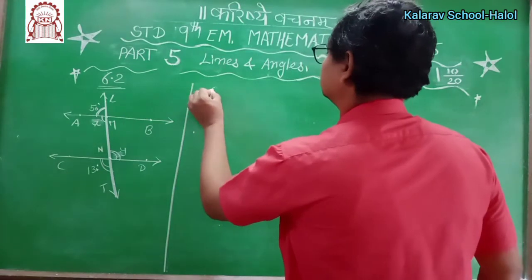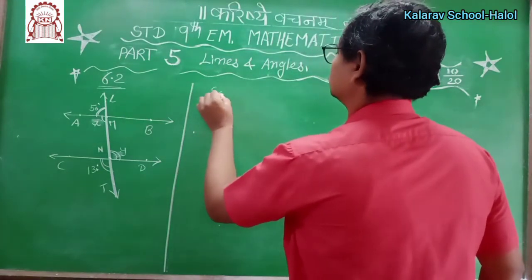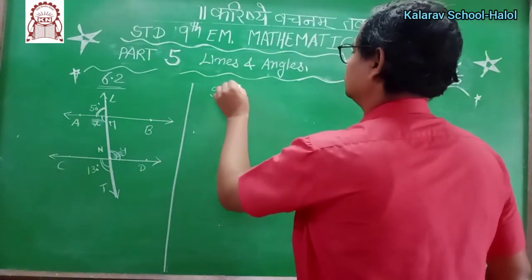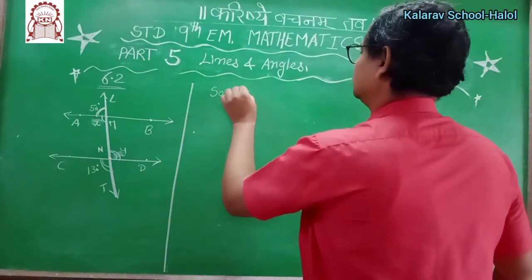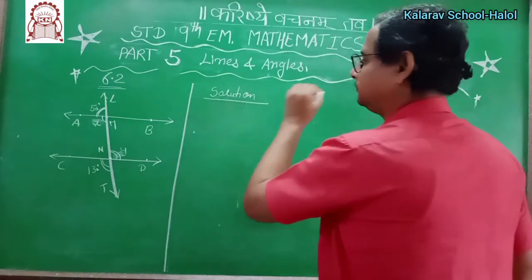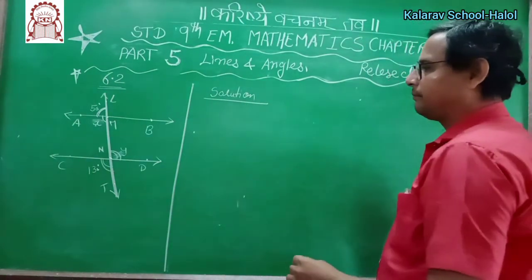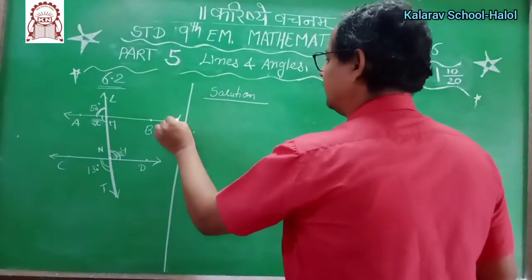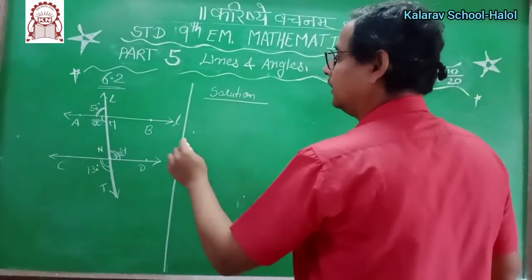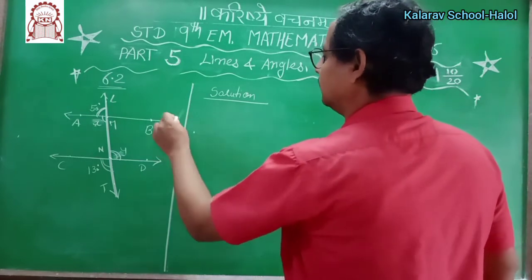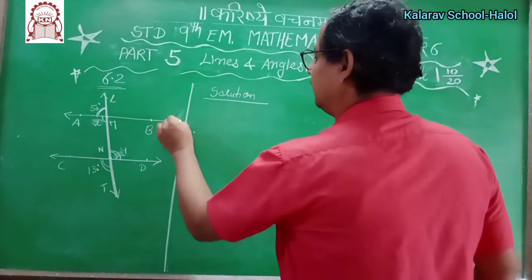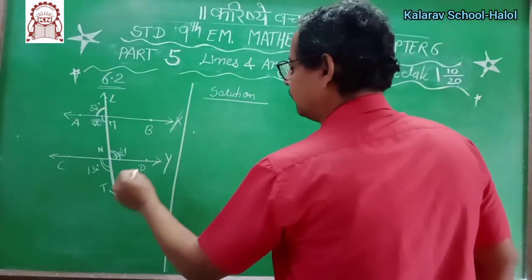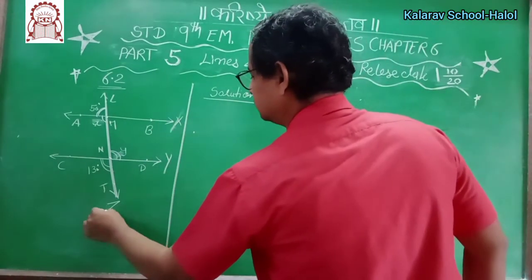Solution. Let's take X, Y, and Z. Line X is parallel, and Z is its transversal.